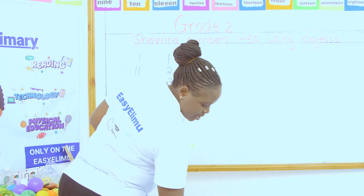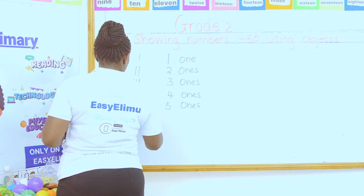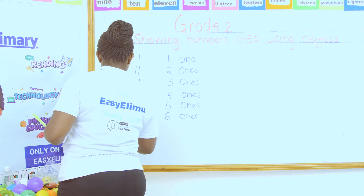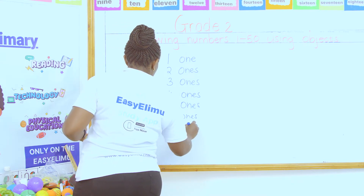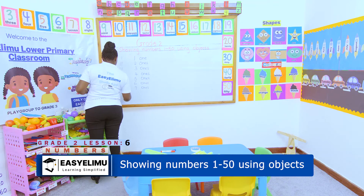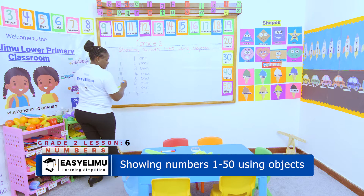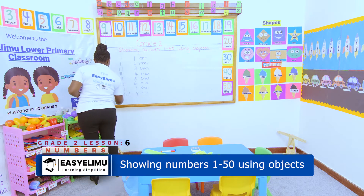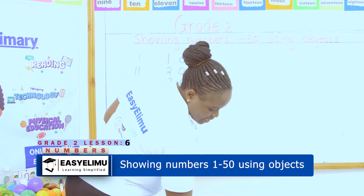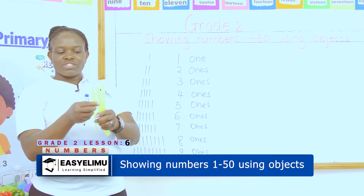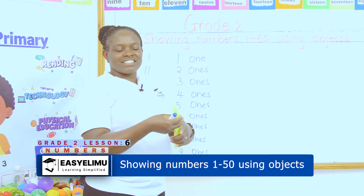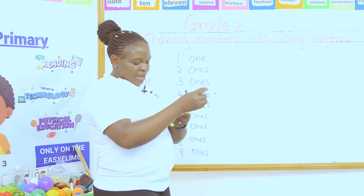When I add another one they become six ones. Then seven ones. If I add another one, eight ones. Then I add another one — nine ones. What if I add another one? One, two, three, four, five, six, seven, eight, nine, ten. What have I made? I have made a bundle — a bundle of sticks.